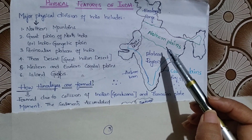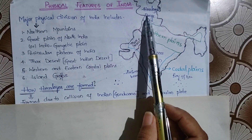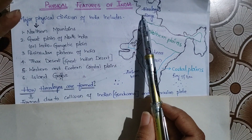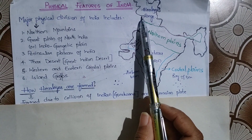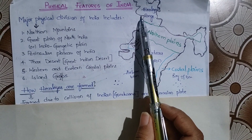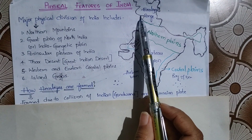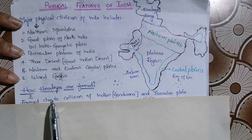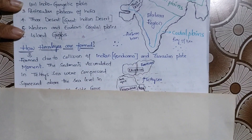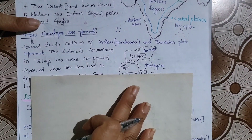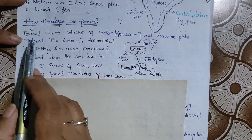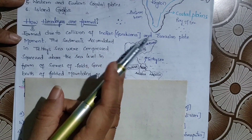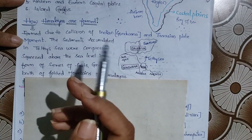In our videos, we will discuss each one in detail covering all important points from an exam point of view. Today we are going to see about the Himalayan ranges. The Himalayas have the highest peaks in the world, and there are important ranges within them we need to focus on. First of all, how these Himalayas were formed is an important topic. Himalayas were formed due to the collision of the Indian plate, that is the Gondwana plate, and the Eurasian plate.